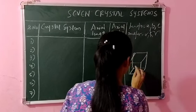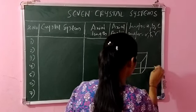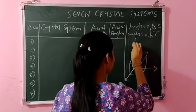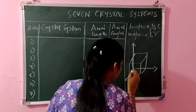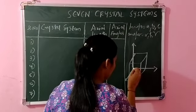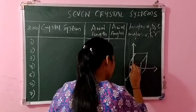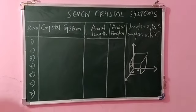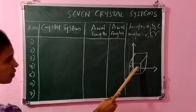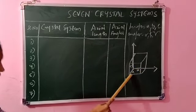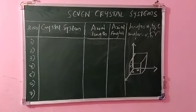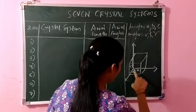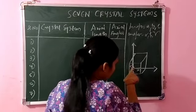Consider this as a cube. You'll have three axes — this one axis, one axis, and one axis in three dimensions. The axial lengths are: this distance is taken as a, this distance is b, and this distance is c. These are the axial lengths I'm showing you in the diagram.